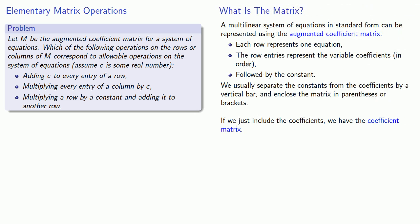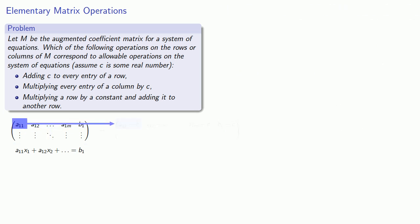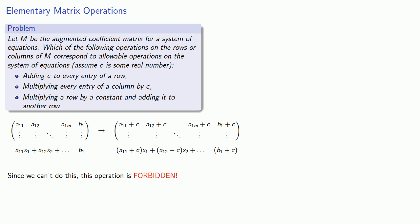Remember that every row corresponds to the coefficient and constant terms of one equation. So if we add c to every entry of a row, we're adding c to every coefficient and to the constant. But we can't do that in a system of equations, so this operation is forbidden.